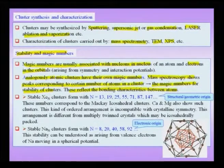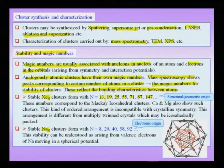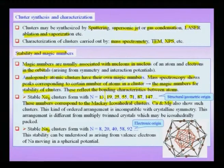A couple of examples: xenon and sodium clusters. The subscript n refers to the number of atoms in a cluster. For xenon clusters, those with 13, 19, 25, 55, 71, 87, 147 etcetera atoms are more stable than clusters with something in between, like 15, 16, or 17 atom clusters. These numbers correspond to the Mackay icosahedral kind of cluster. Calcium and magnesium also show these exact same magic numbers.